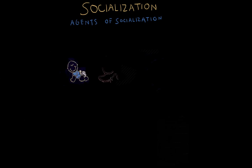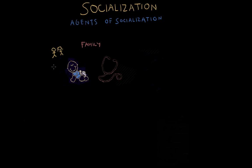Let's look at a few different examples. Family is usually considered to be the most important agent of socialization. When you are born and you are a baby, you are completely dependent on others to survive. Your parents, or those playing an important role, teach you how to care for yourself, how close relationships work, and also their values, beliefs, and norms. An example of how family plays an important role in socialization comes from Malcolm Gladwell's book Outliers.